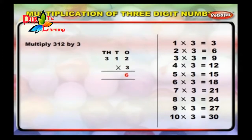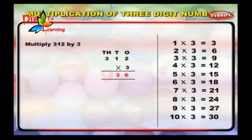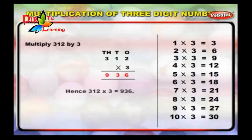Step 3: Multiply 3 hundreds by 3. 3 hundreds into 3 is equal to 9 hundreds. Write 9 under the hundreds column. Hence, 312 multiplied by 3 is equal to 936.